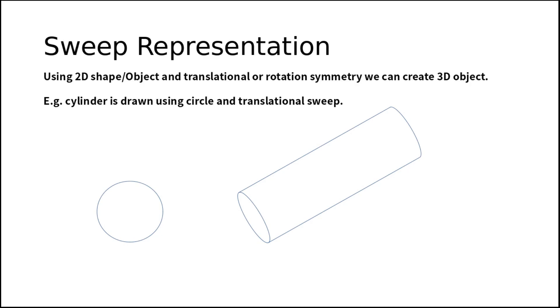The next method is sweep representation. In sweep representation, you take a 2D shape or 2D object, and using translational or rotational symmetry, you can draw a 3D object. For example, a cylinder is drawn here with a circle using translational sweep.